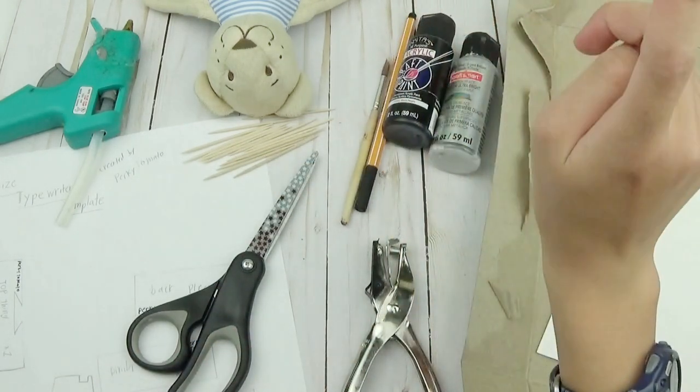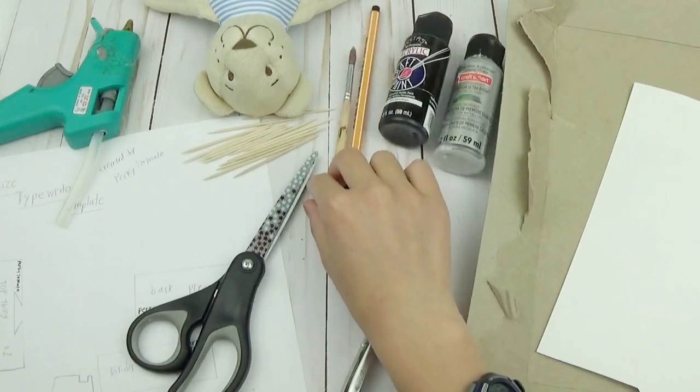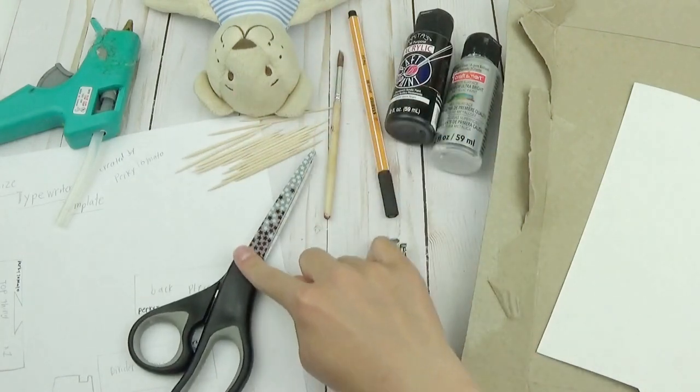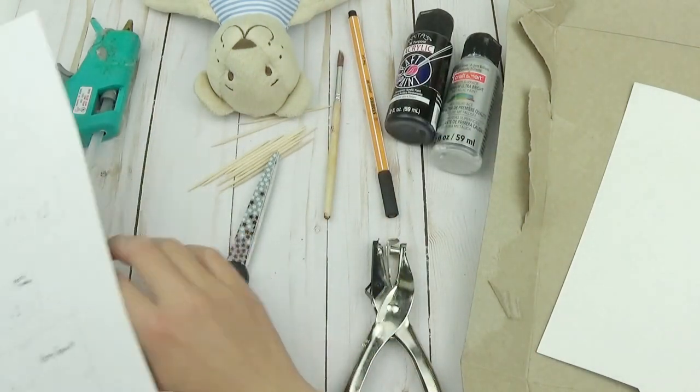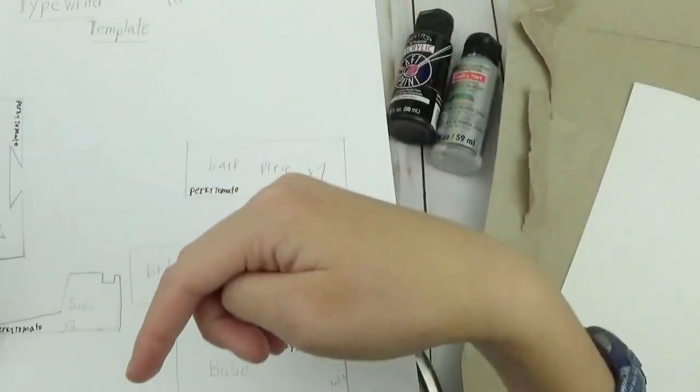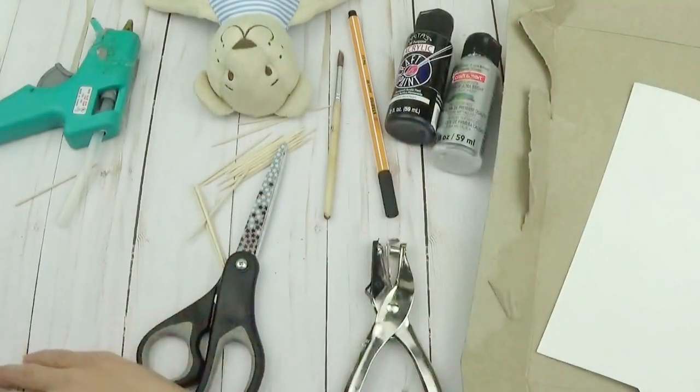Some paint—I'm using black acrylic paint and silver metallic paint—a paintbrush, a black thin marker, several toothpicks, scissors, and this template. I made this template and it's going to make your life way easier when making this craft, so I'll leave this in the description box so you can print it off. You're also going to be needing a hot glue gun.